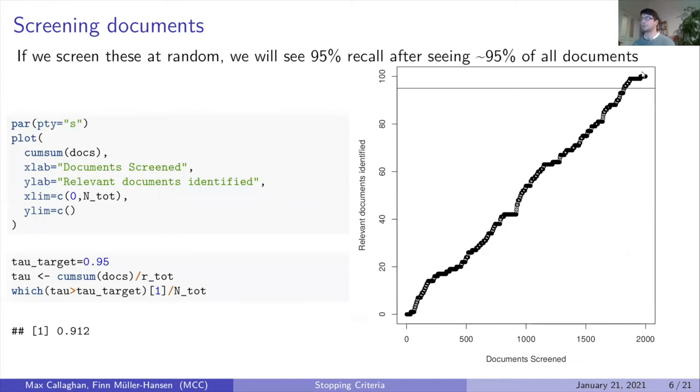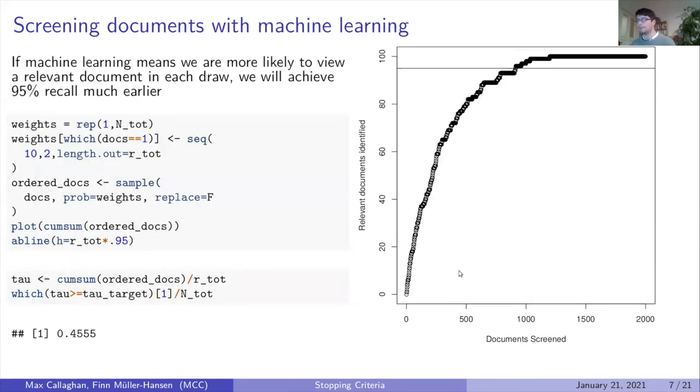If we screen documents at random, we will see 95 percent of relevant documents after seeing about 95 percent of all documents. This line here represents achieving the target. However, if we can use machine learning to identify relevant documents faster, we will achieve this target faster and could save some work.